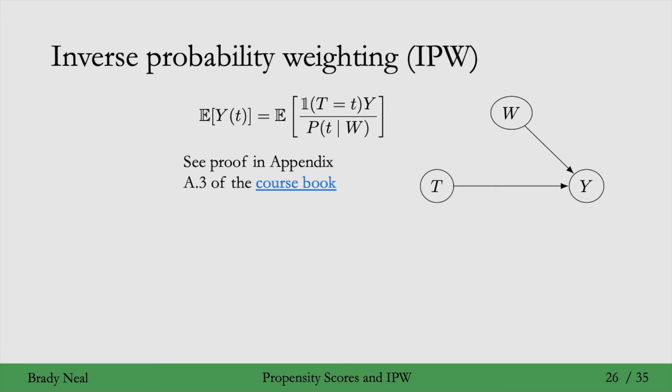You can see the proof for this in appendix A3 of the course book. It turns out that this statistical estimate is equivalent to the estimate that we're used to seeing in COM estimation. But this formulation of the statistical estimate suggests a different kind of estimation: inverse probability weighting.